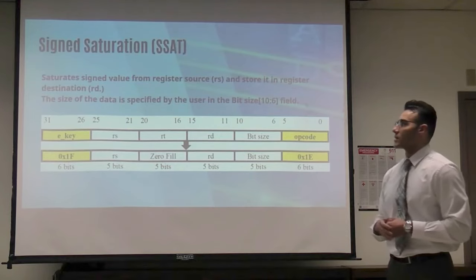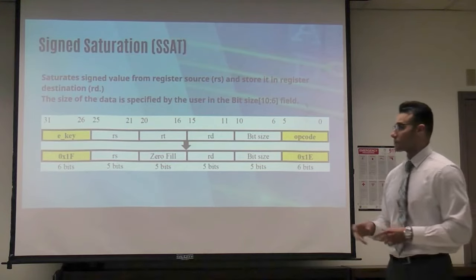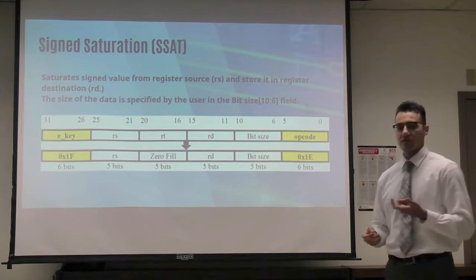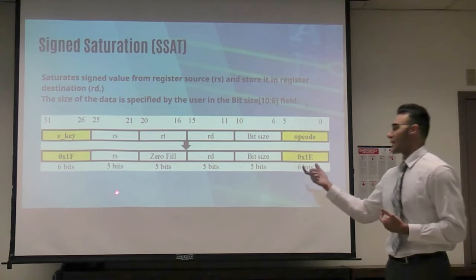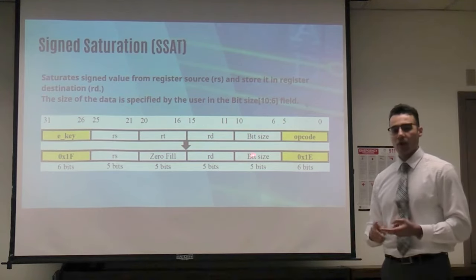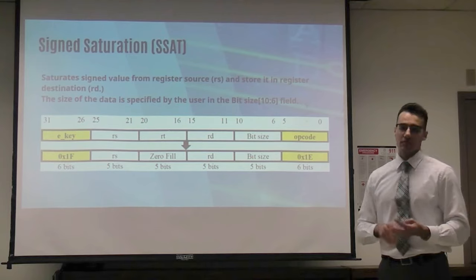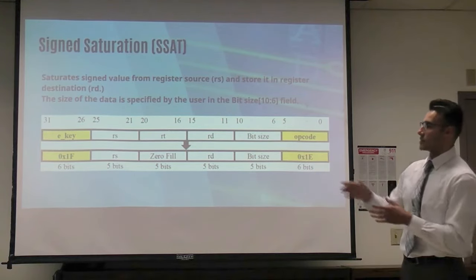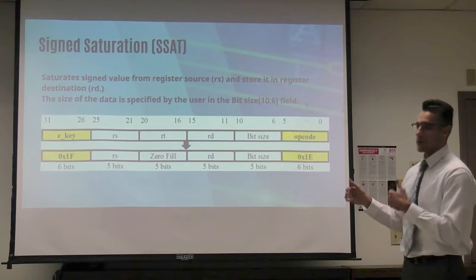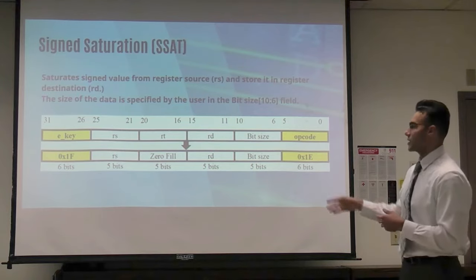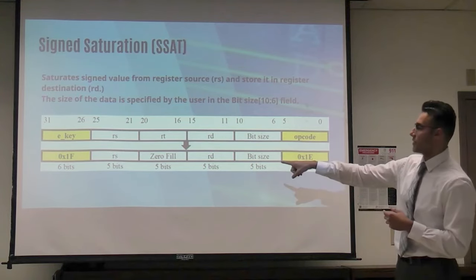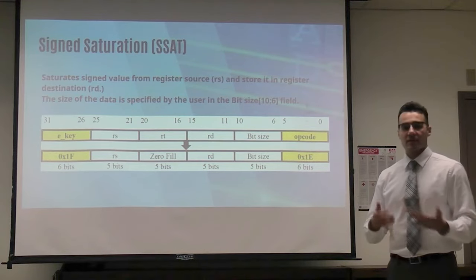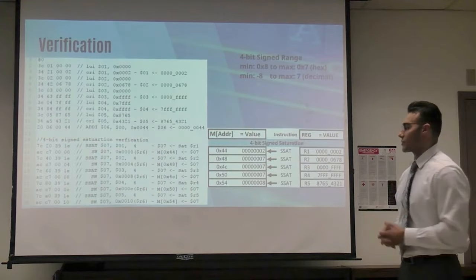This is our signed saturation instruction. The user specifies the source register and the bit size, which can be 4, 8, 16, or 32. It depends on the data in there. If it's bigger than the bounds of 4, 8, 16, or 32 bits, it will saturate it and save it to the destination register. Otherwise, it will pass the data through and save it to that register.